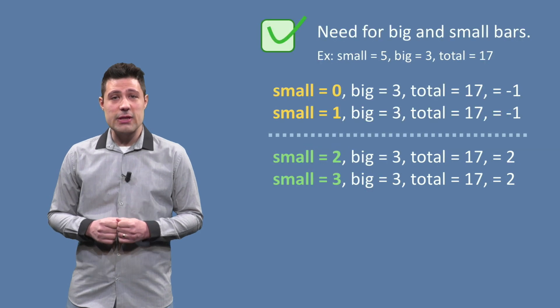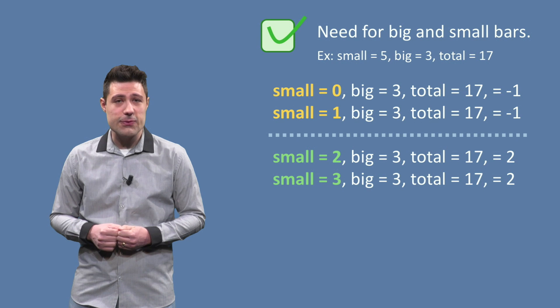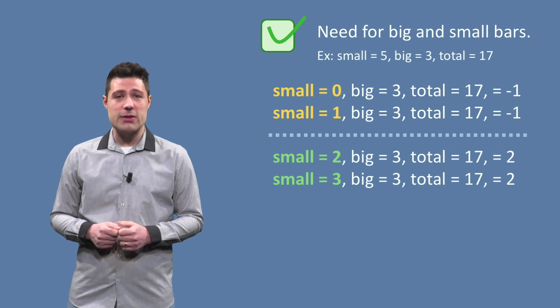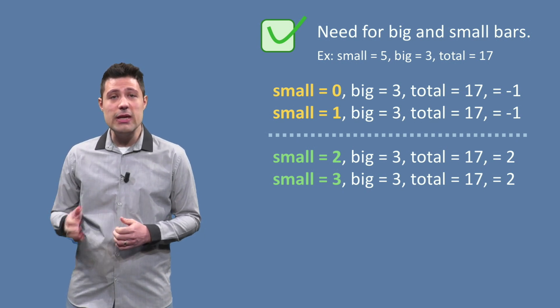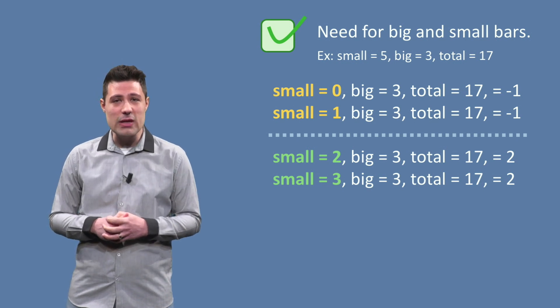If we get to the partition that started all this discussion, need for big and small bars, we see that the boundary happens when we can't use big and small bars. In this example, when small is between 1 and 2.